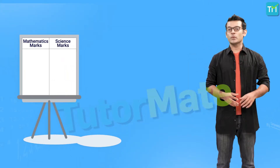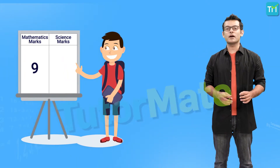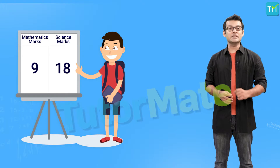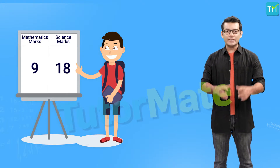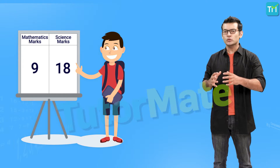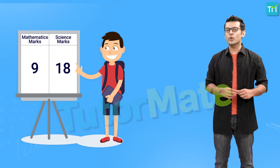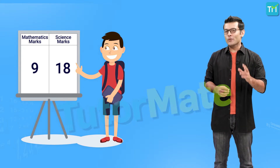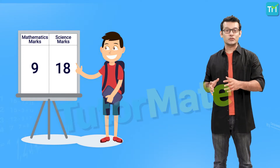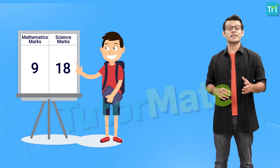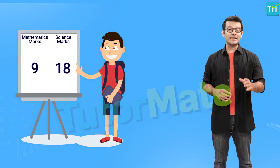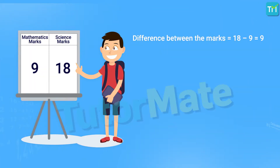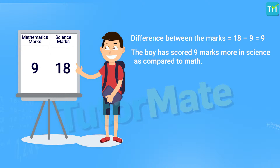Let's say that in a class we have a boy who got 9 marks in mathematics and 18 marks in science. If we want to compare the marks he scored in the two subjects, one way would be by subtracting the two scores. The score in science is 18 and that in math is 9, so the difference is 18 minus 9, which equals 9. Therefore, the boy scored 9 marks more in science compared to math.